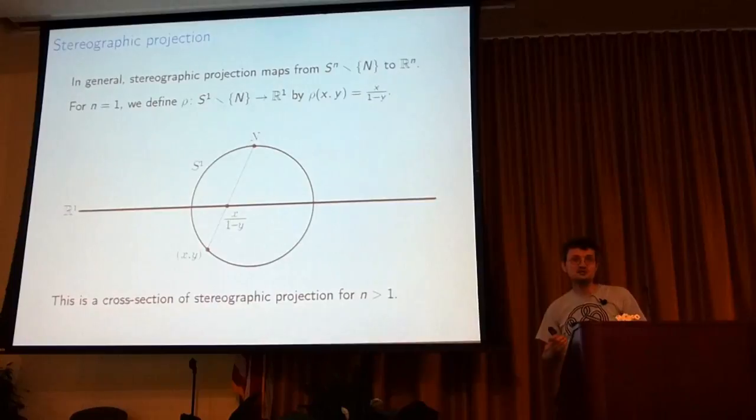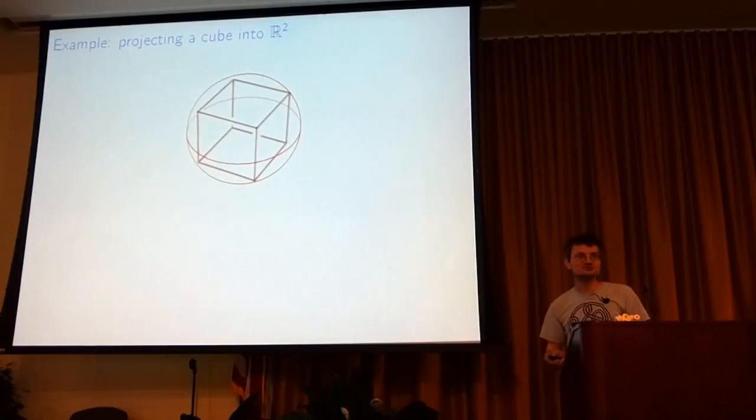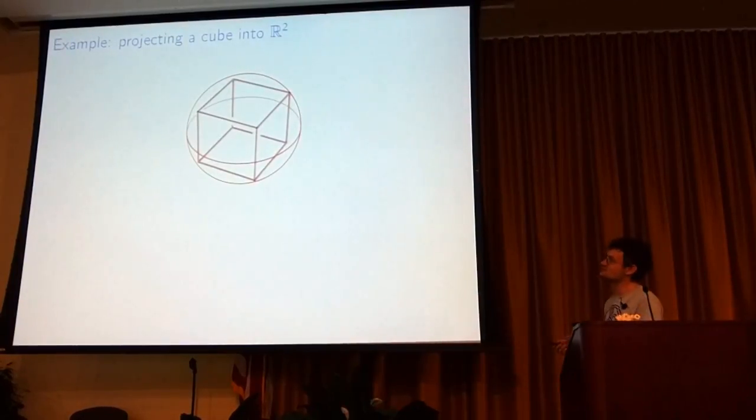And in general, when n is bigger than 1, you just take this picture and rotate it around an axis, and you get what happens to the two-sphere, which is the normal sphere that we're supposed to remember.